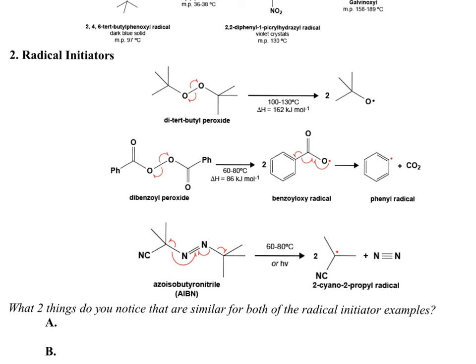Other things can happen. This is AIBN - a classic one people use. This looks like a lot is going on with a lot of fishhook arrows. What you see at the end: you make N2, which of course is a gas that bubbles out of solution - so that's a driving force. You make a radical that's a tertiary radical, and it's also next to a nitrile which could do some pi bond resonance as well. This is another classic initiator. Things to look for: AIBN is a classic one, as are these peroxides.